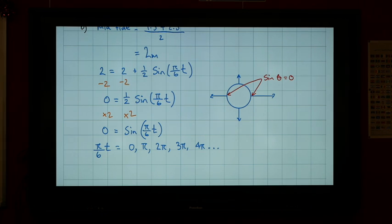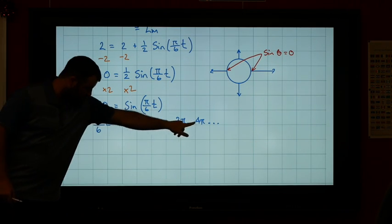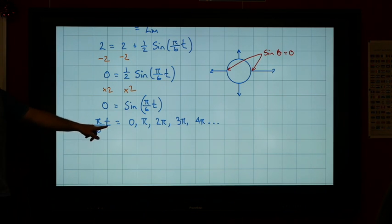And we know that our angle π/6 t is equal to zero, π, 2π, 3π, 4π and so on. Now we're just left with algebra. We've done all the trigonometry part. We've done all our trig. This repeated solutions is our trig. We just need to find out the value of t.